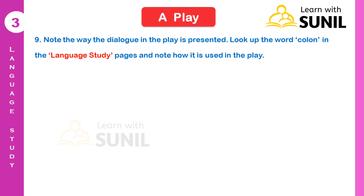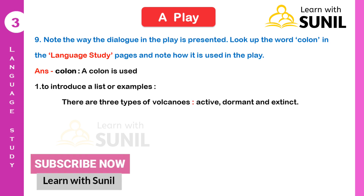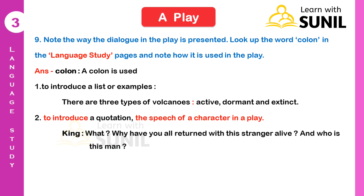Ninth question: Note the way dialogue in this play is presented. Look up the word 'colon' in the language study pages and note how it is used in the play. Answer: A colon is used — first, to introduce a list or examples: 'There are three types of volcanoes: active, dormant, and extinct.' Second, to introduce a quotation or the speech of a character in a play. Example — King: 'What? Why have you all returned with this stranger alive, and who is this man?'